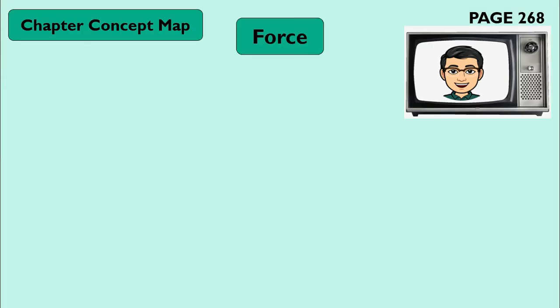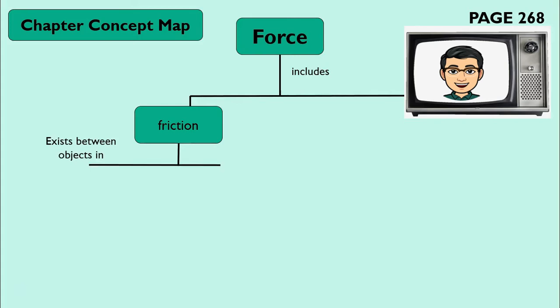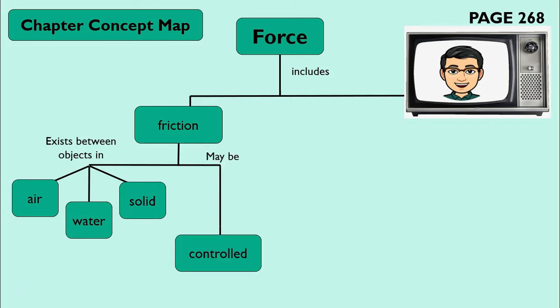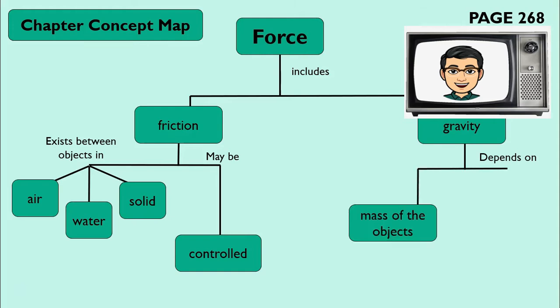Force includes friction. Friction exists between objects in air, water, and solid objects. Friction may be controlled. Force also includes gravity. Gravity depends on the mass of an object and the distance between objects.